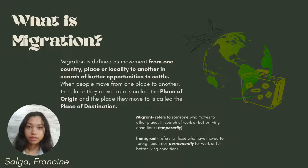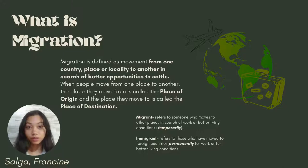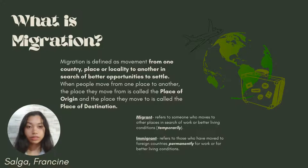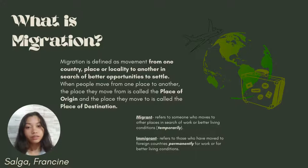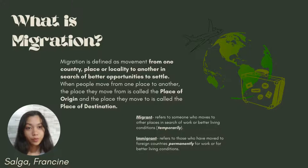What is migration? Migration is defined as movement from one place to another in search for better opportunities to settle. When people move from one place to another, the place they move from is called the place of origin and the place they move to is called the place of destination. For example, you move from the Philippines to the US — you are now called an immigrant or a migrant. The difference is a migrant is temporary while an immigrant is more permanent.